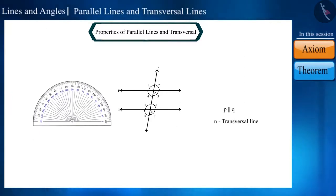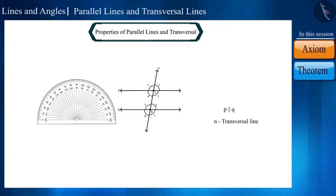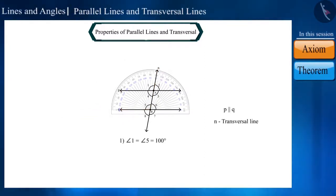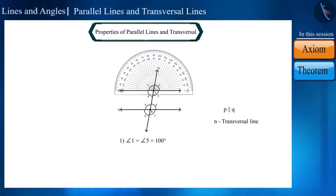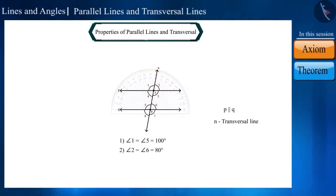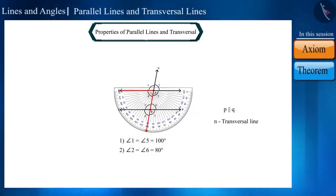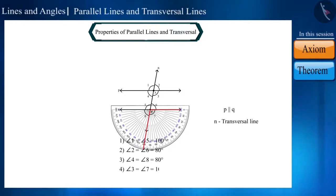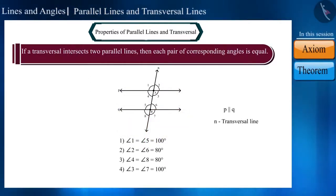Now, with the help of a protractor, let's measure the pair of corresponding angles. Here you can see that angle 1 is equal to angle 5, angle 2 is equal to angle 6, angle 4 is equal to angle 8, and angle 3 is equal to angle 7. Now we can see that if a transversal intersects two parallel lines, then each pair of corresponding angles are equal.